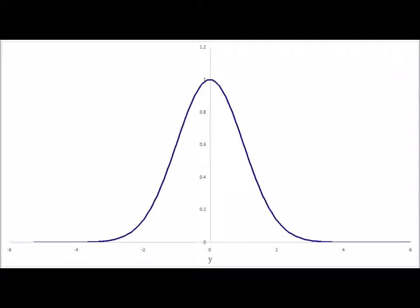The wave function is symmetric around x equals zero, which corresponds to the equilibrium bond length. So we see that in the n equals zero state, the particle tends to stay roughly around its equilibrium position.